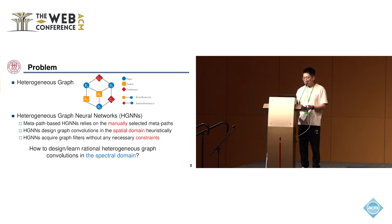And four types of edges that are written by, published, and published in. At present, heterogeneous graph neural networks usually work as a main method to deal with this heterogeneous graph. But existing HGNNs exhibit several limitations.